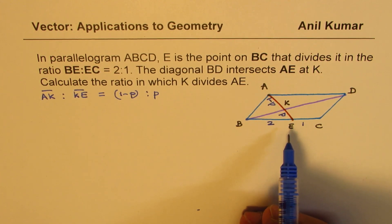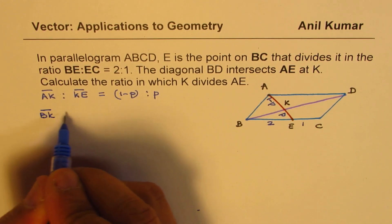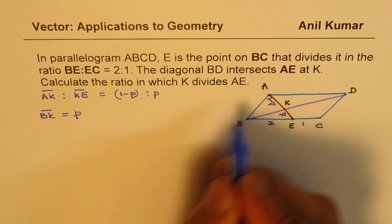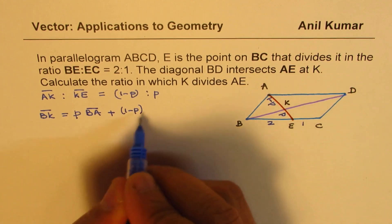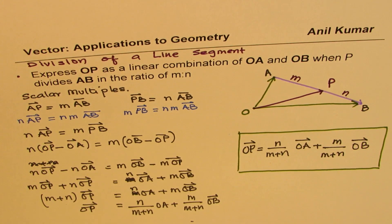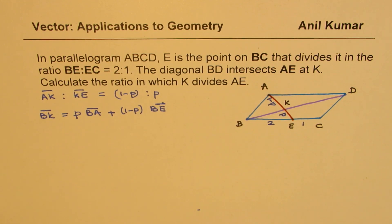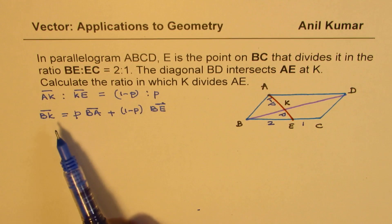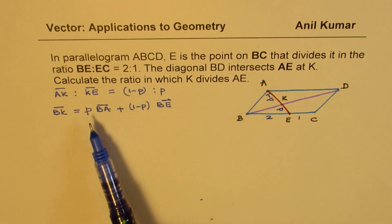Now, if that is the case, how can I describe BK? BK will be P times BA plus (1-P) times BE. At this stage, I've utilized the formula on division of a line segment. This formula finds huge application whenever you have division of line segment into a fixed ratio. I'll provide you with a link on the same.